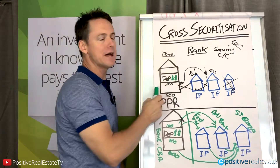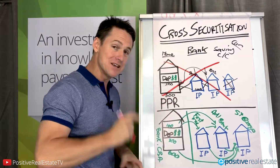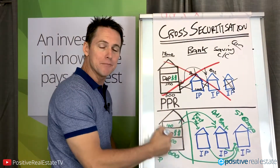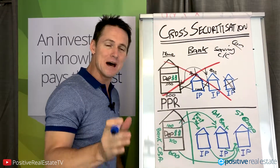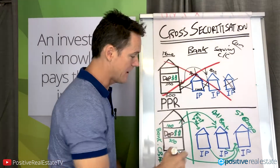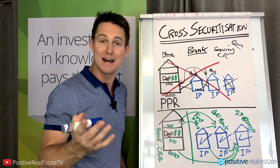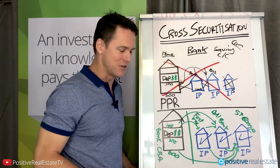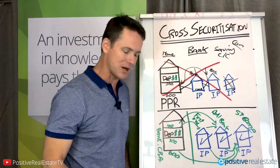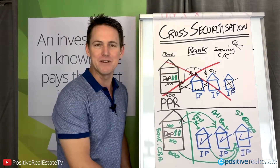As a property investor, cross-collateralization and cross-securitization are a big absolute no-no - don't do it. In the early days of your portfolio it will be a handbrake and hold you back. When you set up the right redraw facilities and investment accounts, a smart experienced finance broker who's an investment broker will know how to do this. Setting up your finance structure is pretty important - if you can't get finance, it's like oxygen, you can't breathe. If you want to know more, get along to one of our property investment nights running around Australia this year.